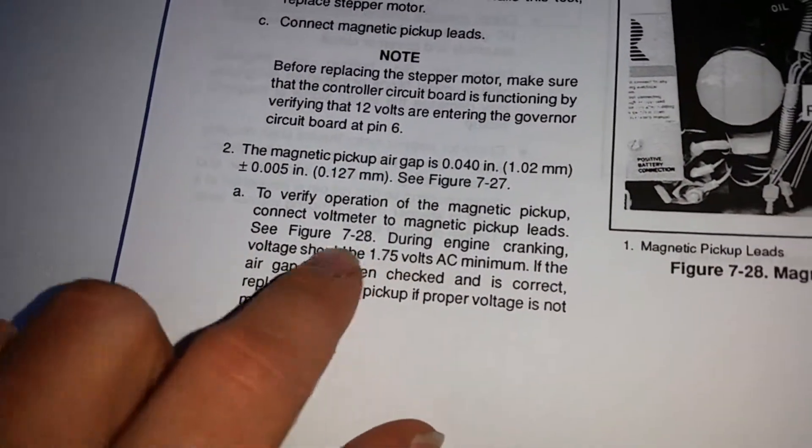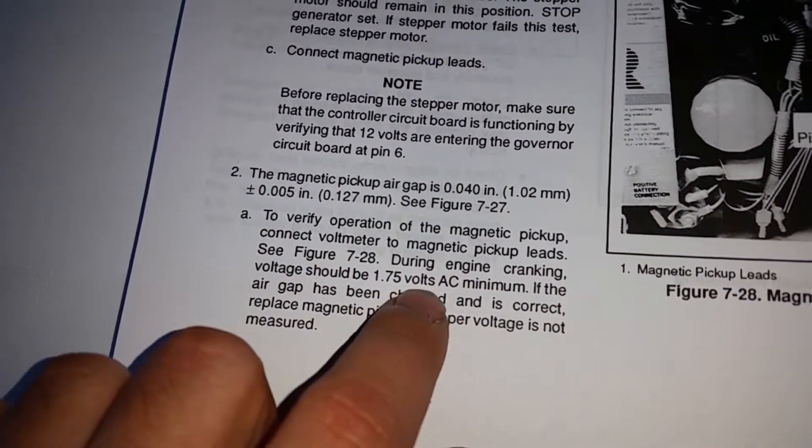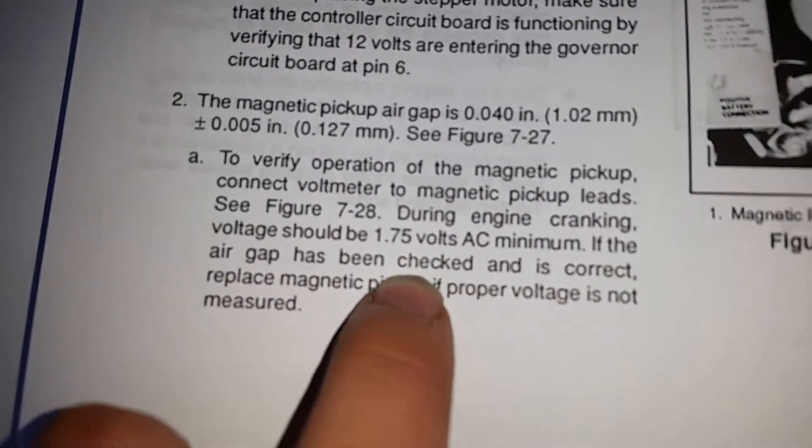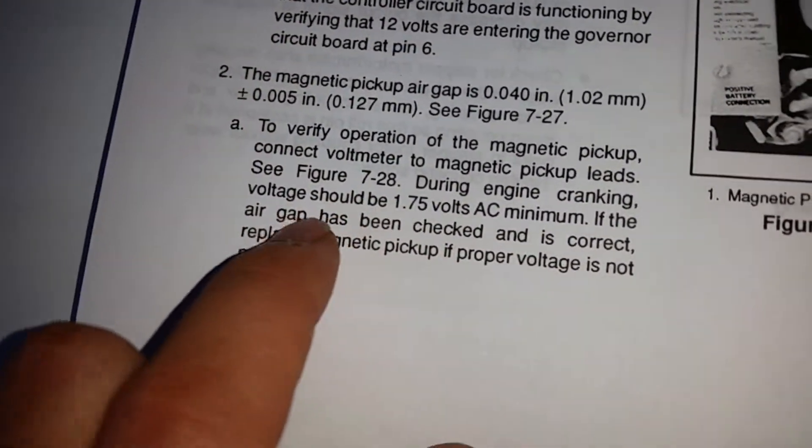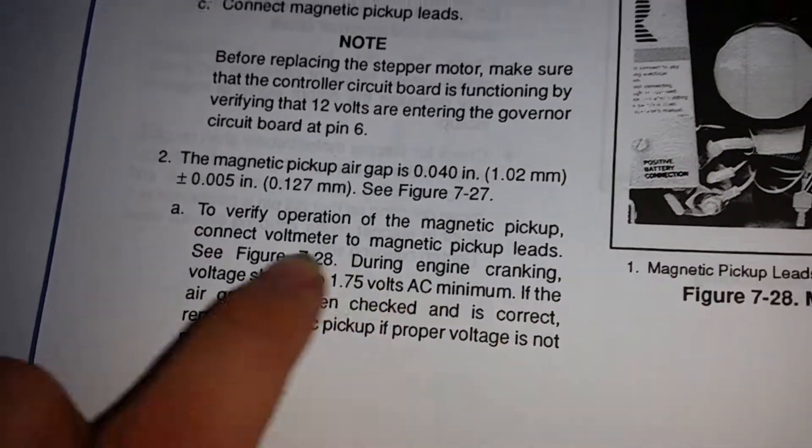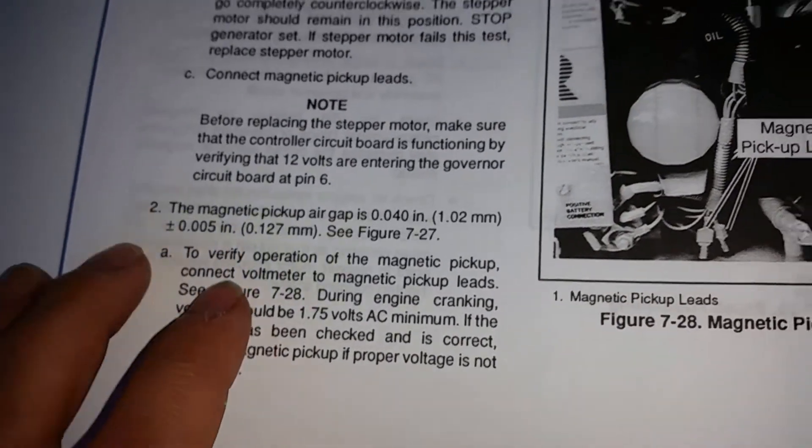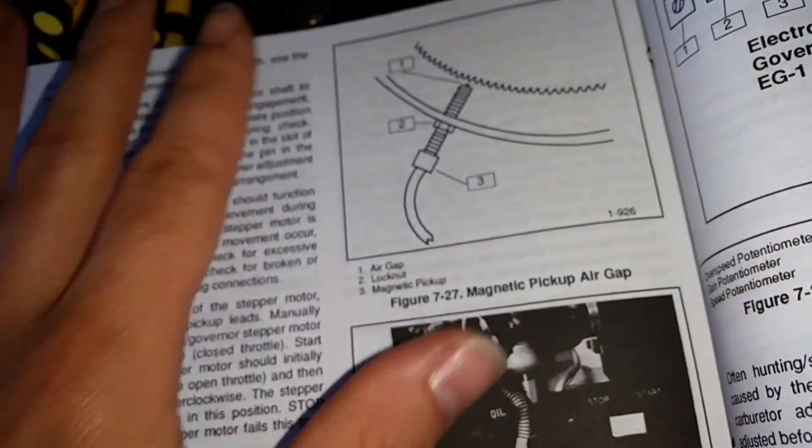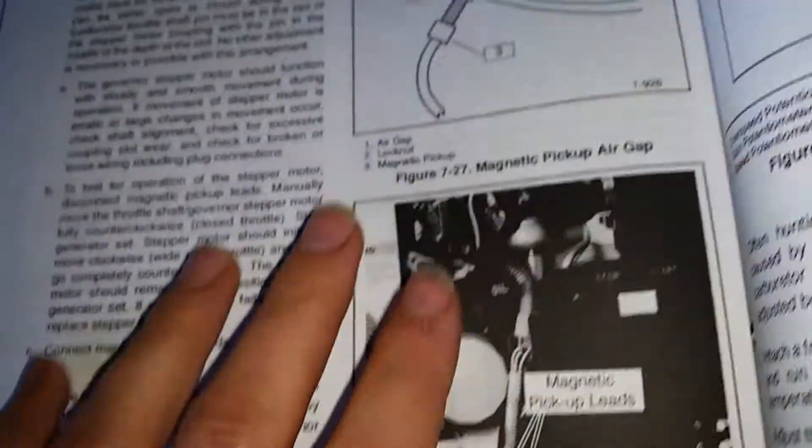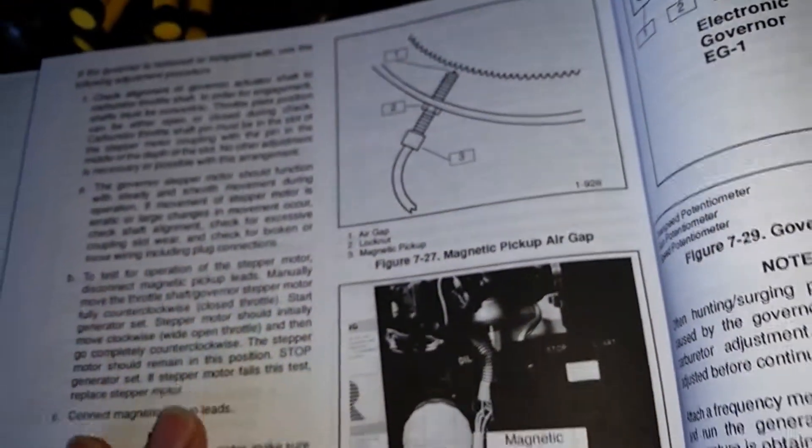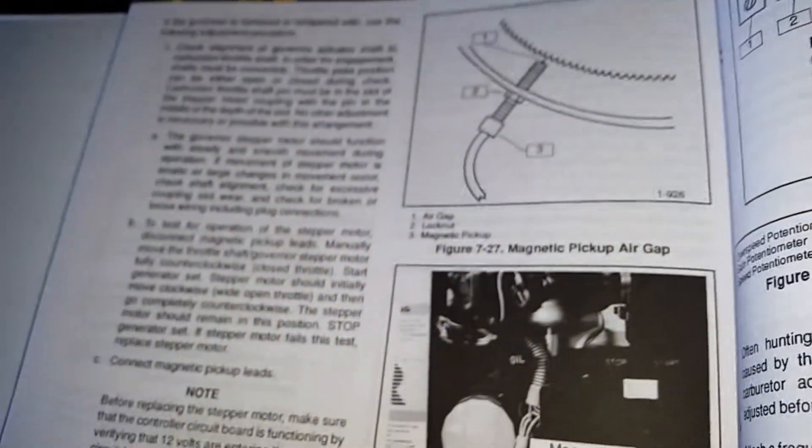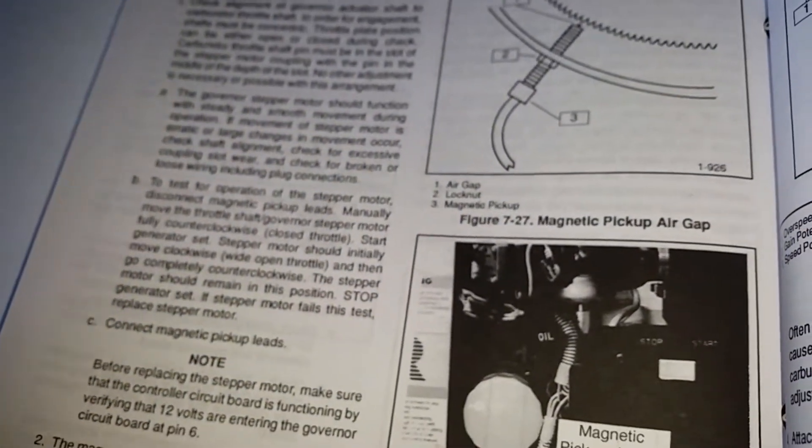I did some tests on it after I had done that. And I was getting about 1.8, 1.9 volts. As you can see here, during engine cranking, voltage should be 1.75 volts AC minimum. A lot higher than the 0.3 volts I was getting. So after I did that, I got that voltage reading, hooked everything up and started working like it should again. Throttle doesn't just close completely and not allow the generator to start. A safety feature, obviously.